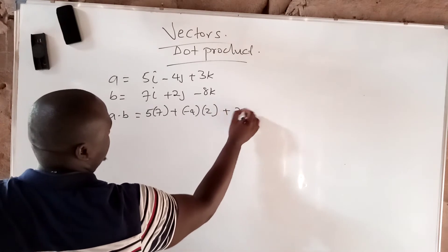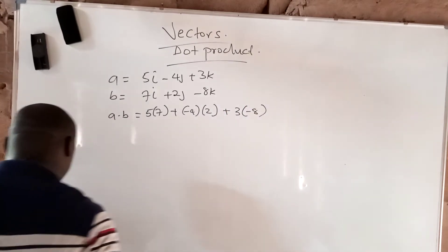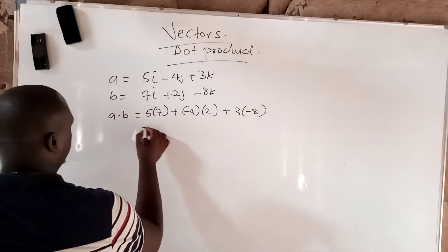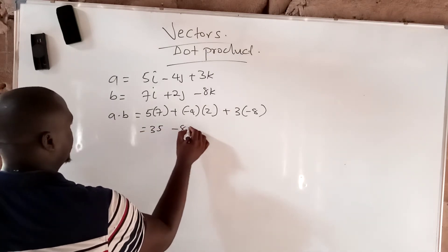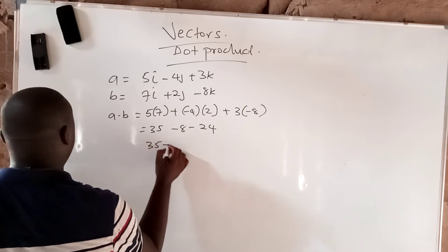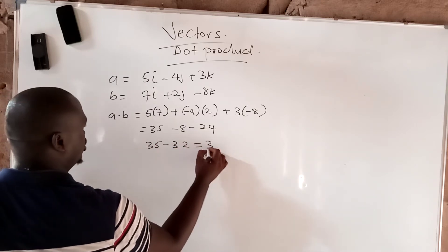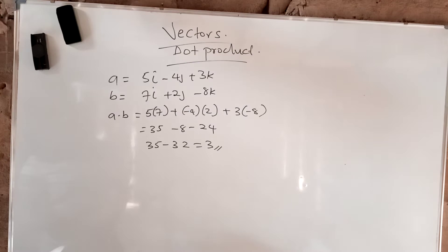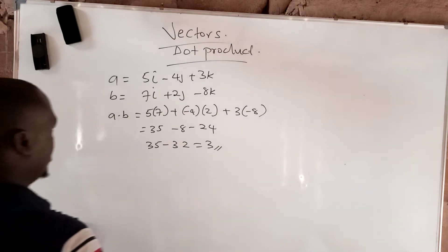Plus 3 times minus 8. That will give you 35 minus 8 minus 24, which gives you 35 minus 32, and this will give you an answer of 3.